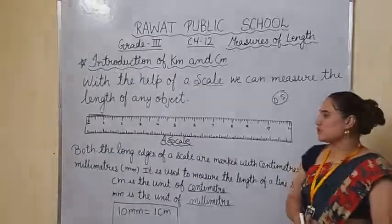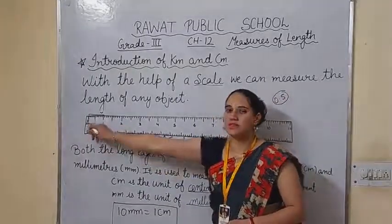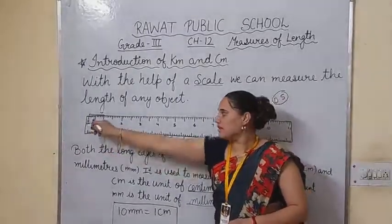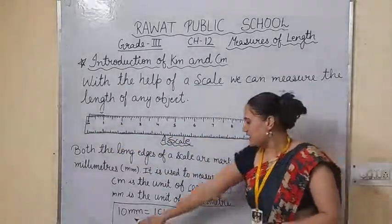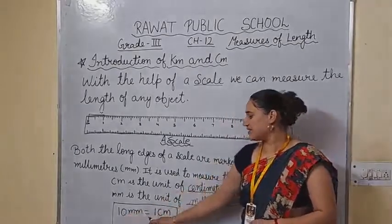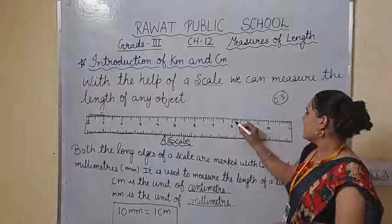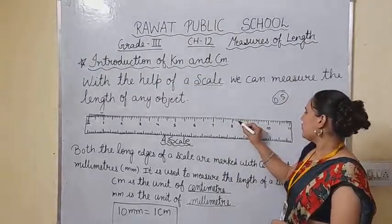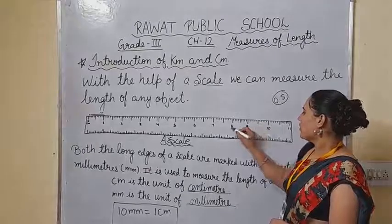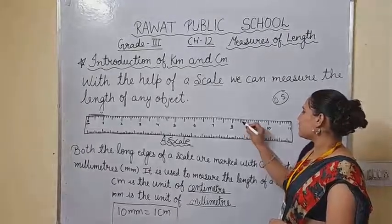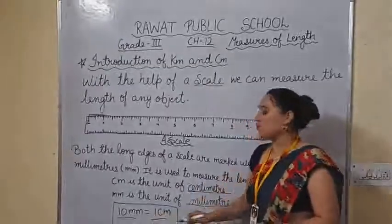Now, as I already told you, between 1 centimeter to 2 centimeter — or you can say 0 to 1 centimeter — there are total 10 lines. So students, we can say that 10 millimeters is equal to 1 centimeter. You can count: 1, 2, 3, 4, 5, 6, 7, 8, 9, 10. So between 8 to 9, there are total 10 lines, and 10 mm is equal to 1 centimeter.